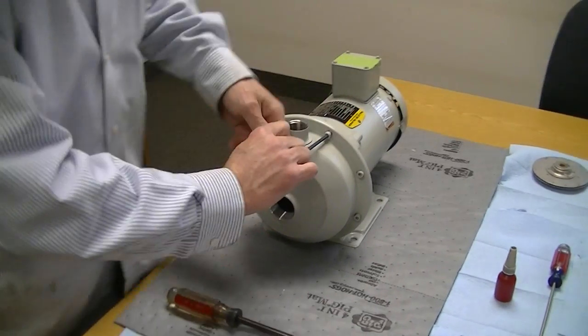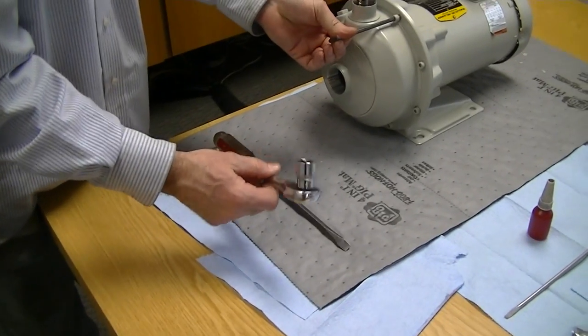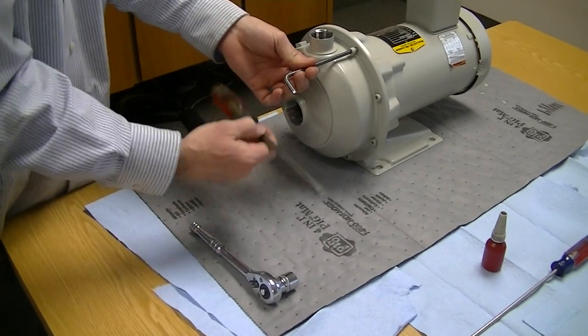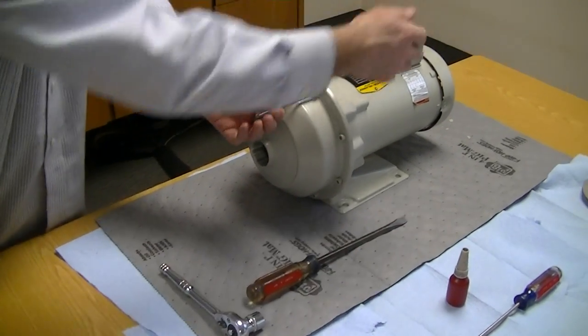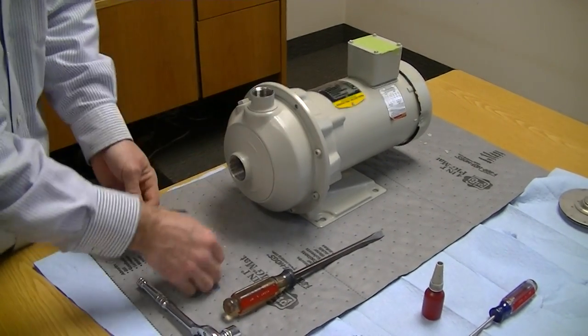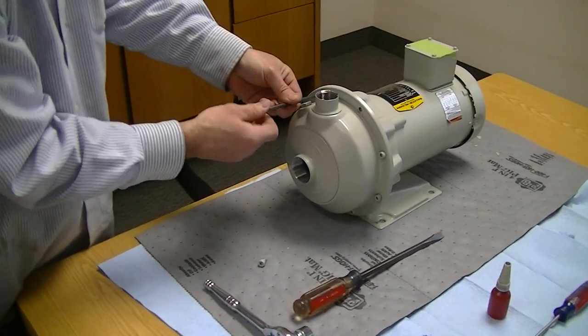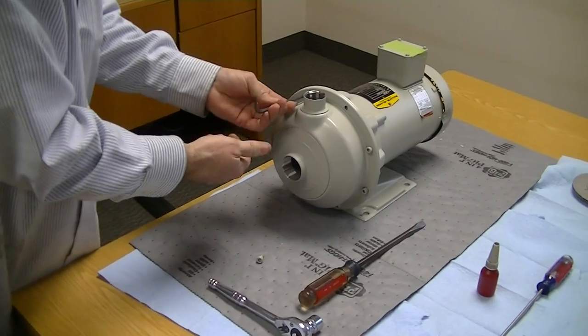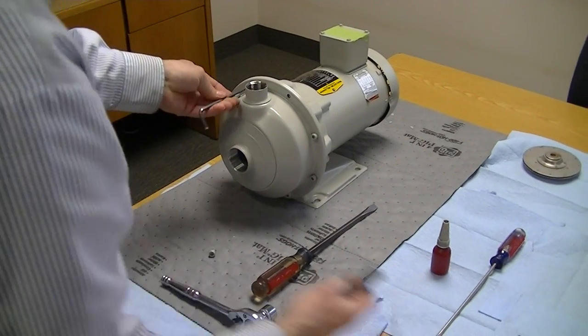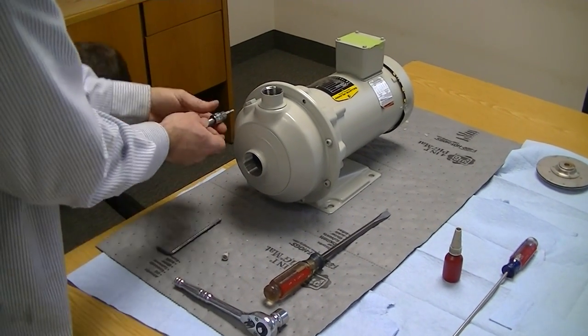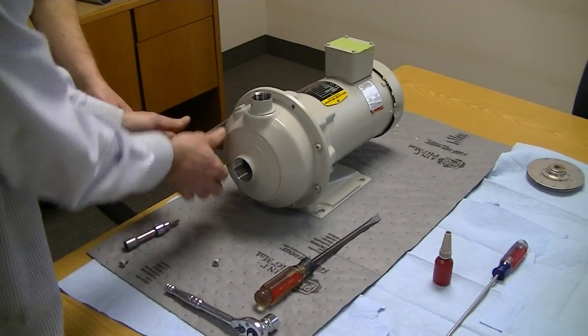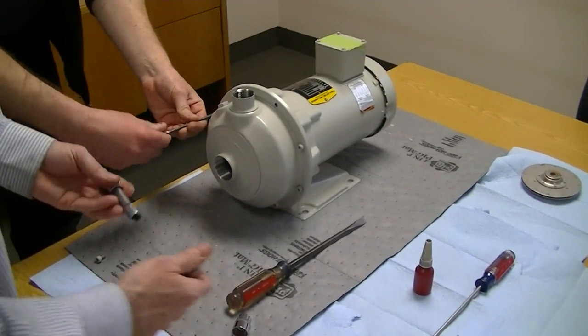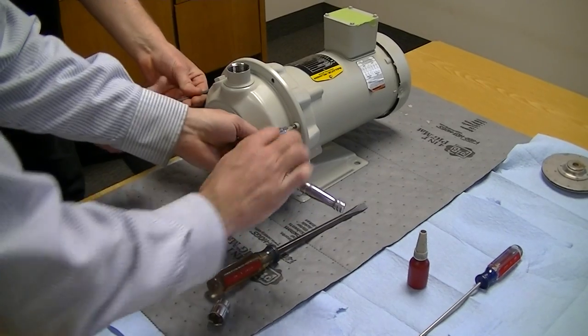The other tools you need are a 5/8 ratchet and a screwdriver to hold the back of the motor. We'll get to that in a minute, but we're going to have to take all these out first.